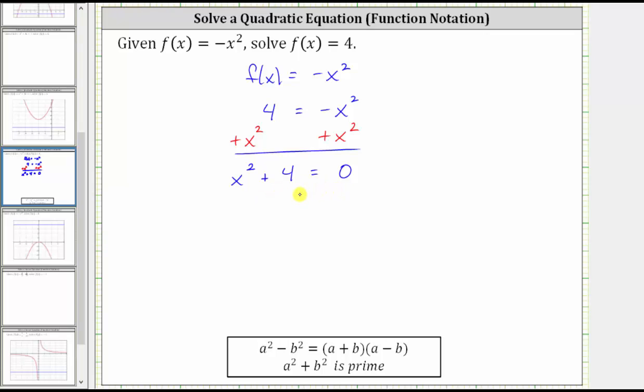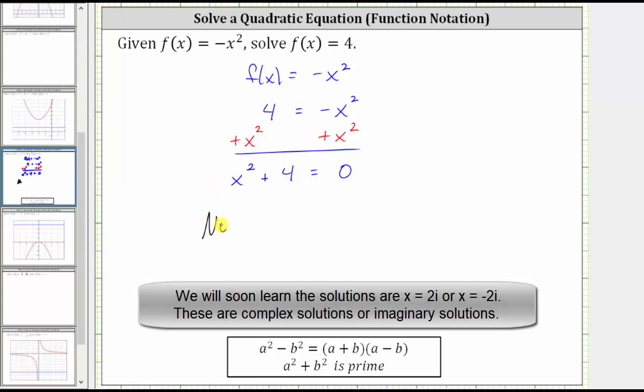When this happens, this indicates that there are no real rational solutions to the equation. So let's write that out. There are no real rational solutions.